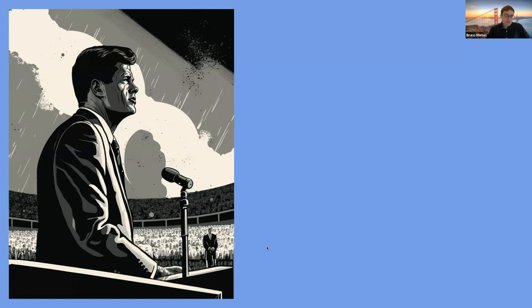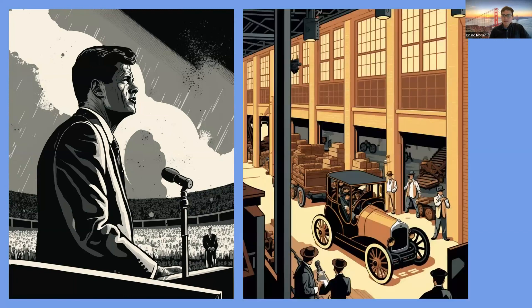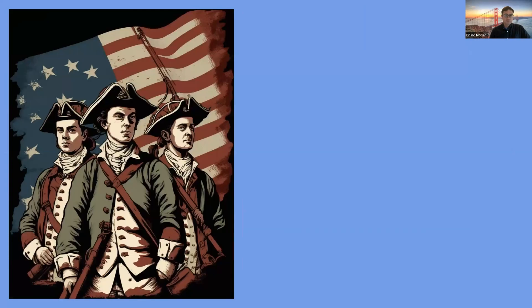I told MidJourney to give me an image of John F. Kennedy in the style of a comic book at Rice University while he's giving his 'going to the moon' speech. Then I asked for a 1920s Model T at a warehouse, also in the style of a comic book. And then Revolutionary War soldiers with the American flag in the background. Sometimes you can be very specific about what you want and usually you'll get something more similar to what you're envisioning. Sometimes you can be more vague and MidJourney will give you a variety of different options to choose from.